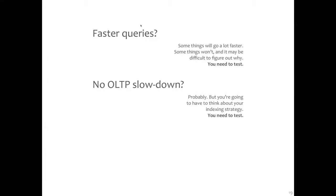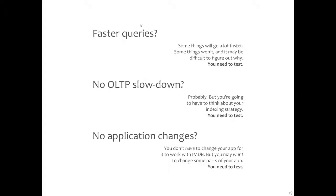Was there an OLTP slowdown? I believe the Oracle story — understanding how the transaction log in the in-memory store is kept up to date, it is cheaper than administering a whole bunch of indexes. But to save the time of maintaining indexes, you're going to have to rethink your indexing strategy. Was application change required? The answer is yes — you don't have to change your app for it to work with in-memory. But you may want to change some parts because they may be very close to really breakthrough performance improvements with just a little change.